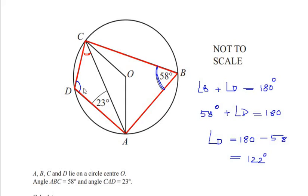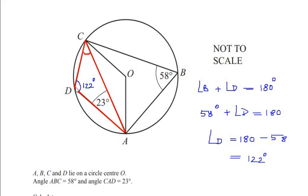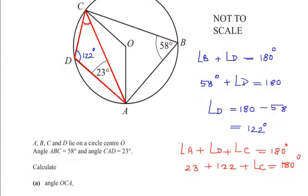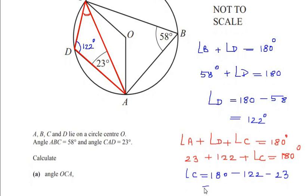Now we know angle D is 122 degrees. Since we need to find angle DCA, let us consider triangle DCA and use the angle sum property: angle A plus angle D plus angle C equals 180 degrees. Substituting, angle A is 23 degrees and angle D is 122 degrees, so angle C equals 180 minus 122 minus 23, which gives us 35 degrees.